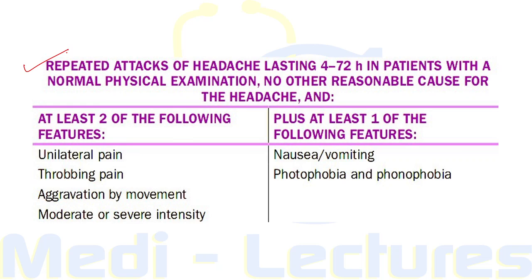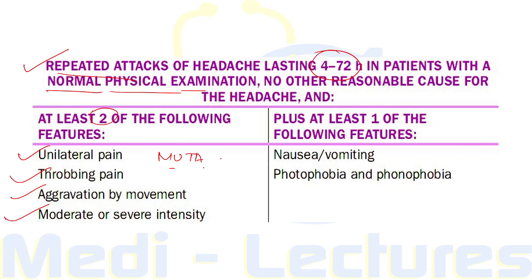The simplified diagnostic criteria for migraine requires repeated attacks of headache lasting 4 to 72 hours in patients with normal physical examination and no other reasonable cause, plus at least two of the following: unilateral pain, throbbing pain, aggravation by movement, and moderate to severe intensity — remembered as MUTA. Additionally, at least one of the following must be present: nausea or vomiting, or photophobia or phonophobia.